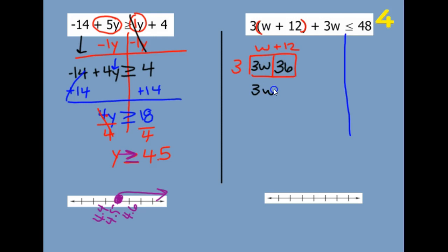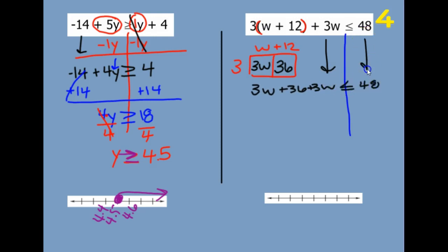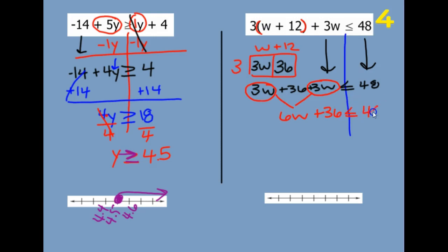So I have 3W plus 36. We have this 3W as well, so plus another 3W — it's less than or equal to 48. So I have a 3W here and a 3W here, so together 3 plus 3 gives us 6W plus 36, less than or equal to 48.